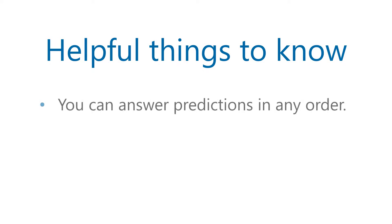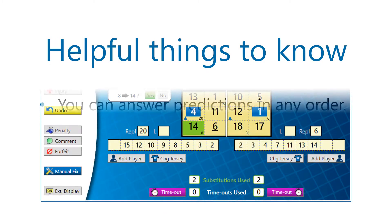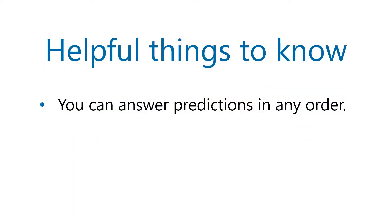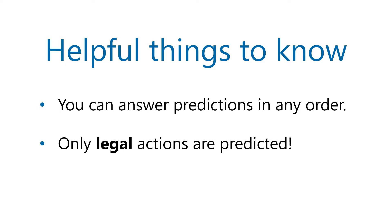When multiple predictions are showing, you can answer them in any order. If something should happen to a player's status — like a concussion, disqualification, or they were involved in an exceptional substitution — so that the next prediction involving that player wouldn't be legal, VolleyWrite doesn't display the prediction bubble. Only legal actions are predicted.